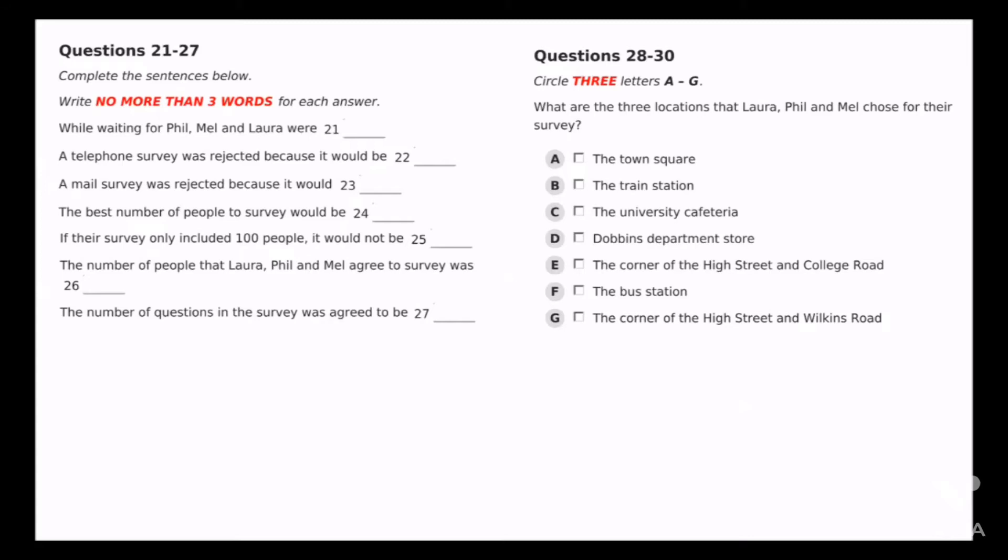I think the other ones in town were good too. The Cafeteria will have too many students and that will create too great a bias to our survey. We need a good cross section of the population and anywhere too close to the University won't give us that. Laura's right. So, out of the other town ones, I think that the two on the High Street corners are good. I don't agree. The High Street corner with College Road would be good, but the corner with Wilkins Road is too far out. Not enough people will come by there. Yes, Mel's right there. We should use Dobbins Department Store instead. I can see your point. OK, that's settled then. All three of us will be stationed in town then, but not the Wilkins Road position.